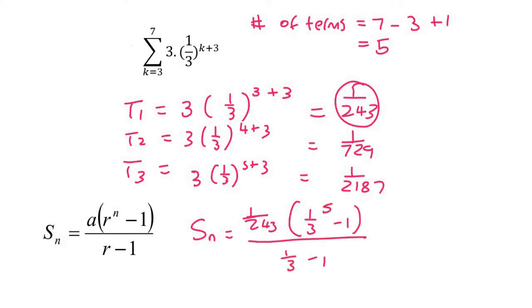What that means is you could, theoretically, calculate t4 and t5, and then you could just add all of these numbers together. It will give you the same answer.